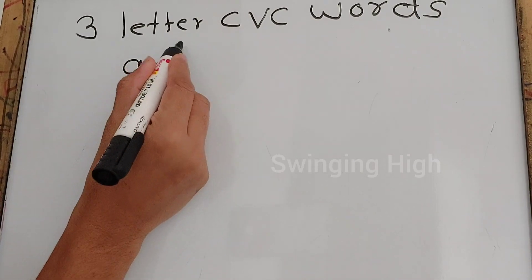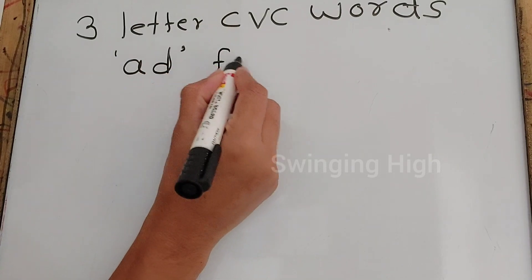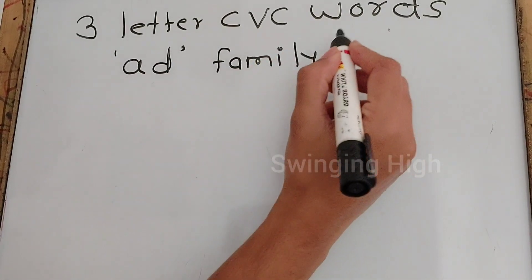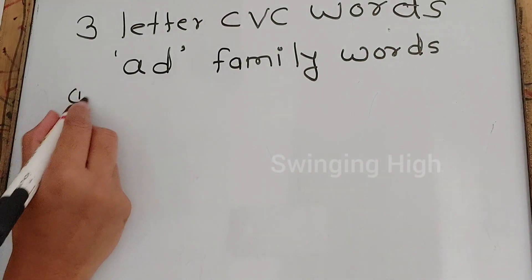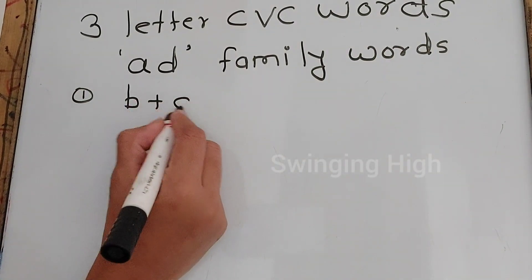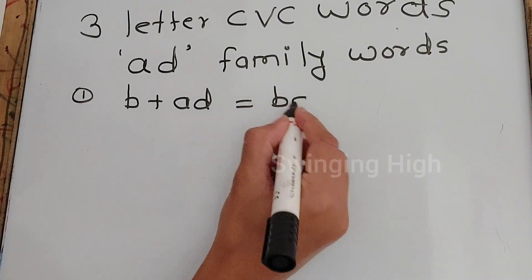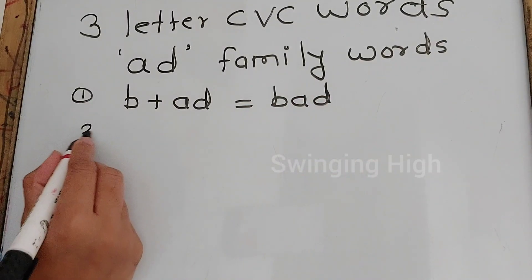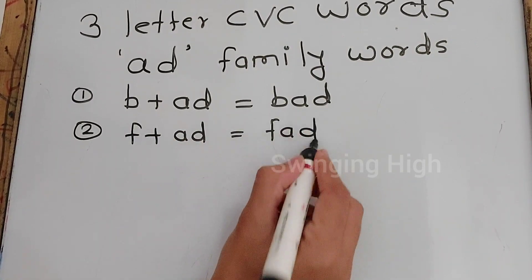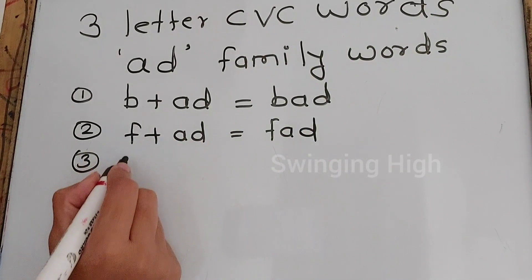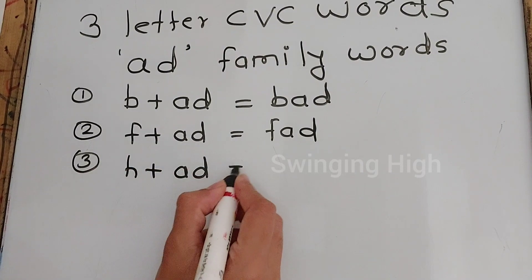Next is ad family words. First word is B-ad, bad. F-ad, fad. H-ad, had.